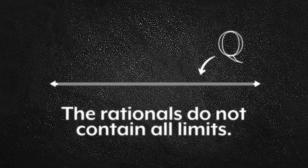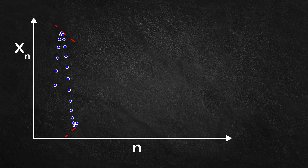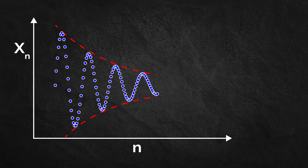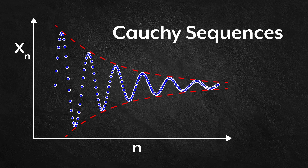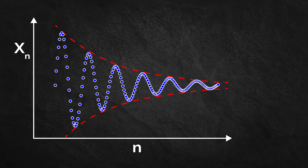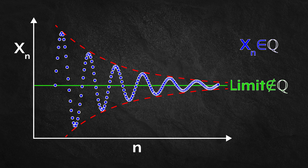We formalize this idea by saying that the rationals do not contain all limits. More precisely, a sequence of numbers converges to a limit if and only if its elements eventually come and remain arbitrarily close to each other. Such convergent sequences are called Cauchy sequences. And the rational numbers are incomplete because some Cauchy sequences of rational numbers have limits which are not rational. But what about the real numbers? Well, every Cauchy sequence of real numbers converges to a real number. So the real numbers are complete.